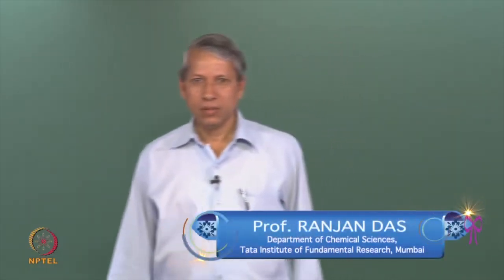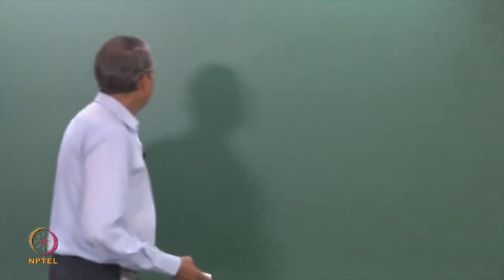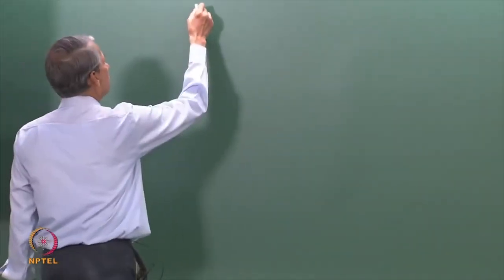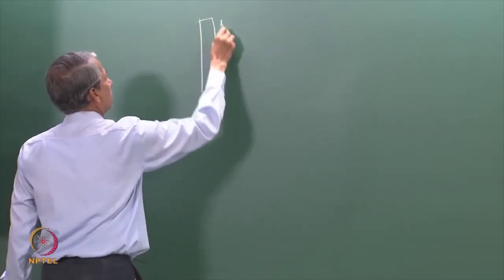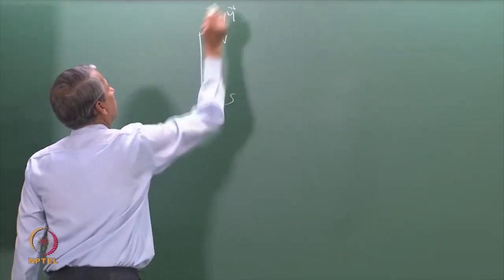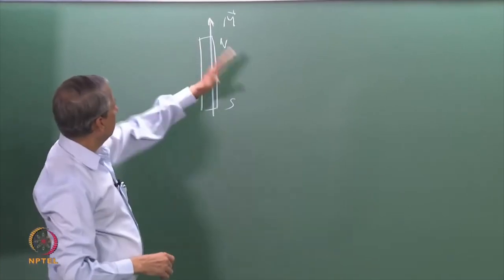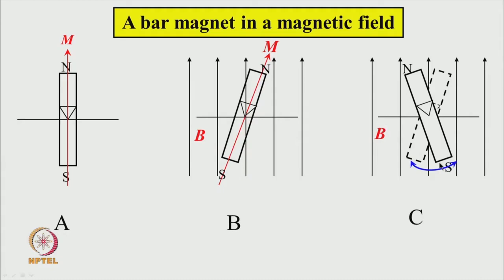Hello, we started our discussion of the motion of a magnet in a magnetic field. We have seen earlier that if we keep a bar magnet in a magnetic field, it undergoes to and fro motion. This is the magnetic moment, and if you put a magnetic field there, it undergoes to and fro motion as we saw earlier. This is the bar magnet in a magnetic field and it undergoes oscillation. We call this motion oscillation.